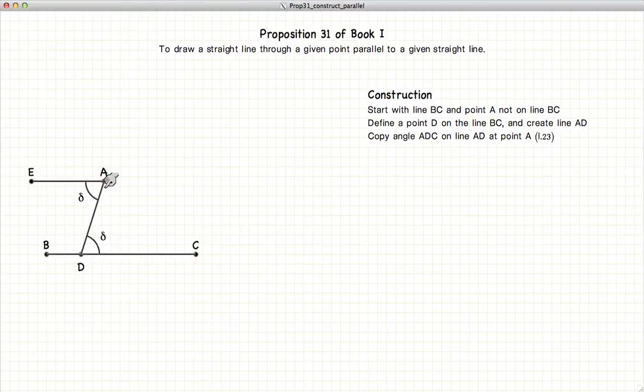We have angle EAD is equal to angle ADC. Extend the line EA to point F, and now we have two lines with the third crossing it where the interior and opposite angles are equal.